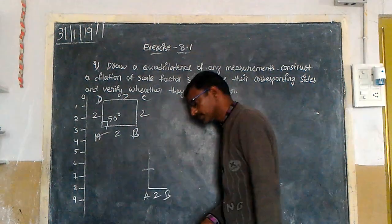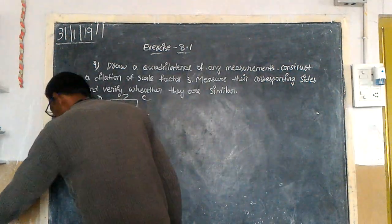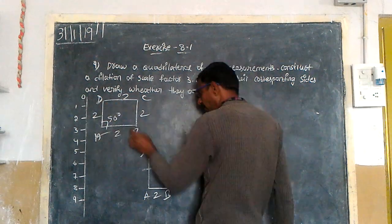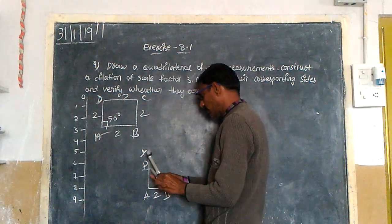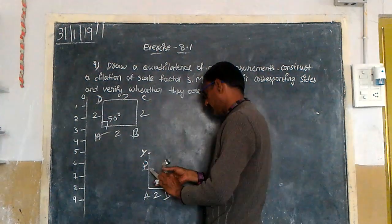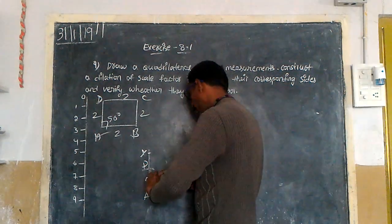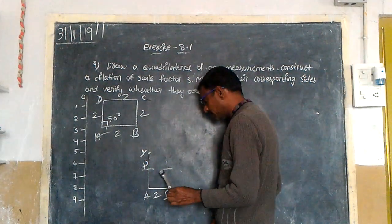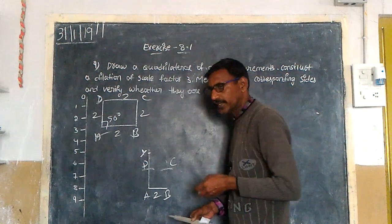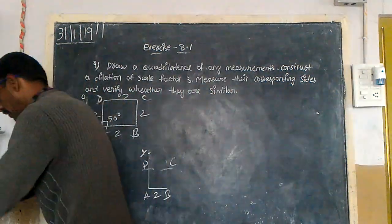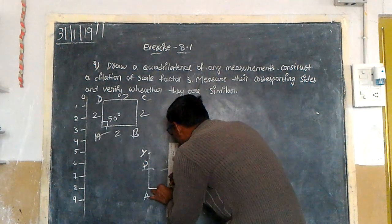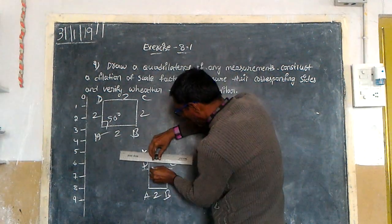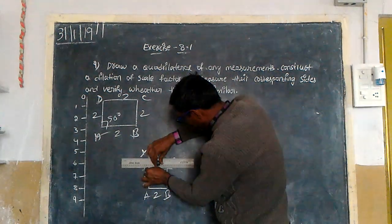Make an arc on the A ray — suppose this is my A ray. Here we can find D. From D to C, how many units? Two units. From D to C: two units. Here we can find C. By joining BC, DC, BC — we get the complete square A, B, C, D.